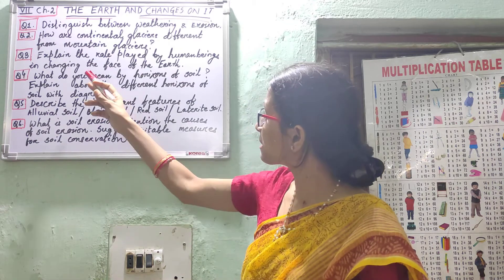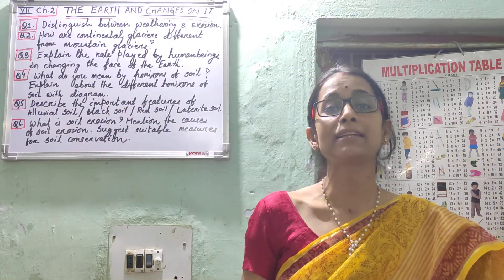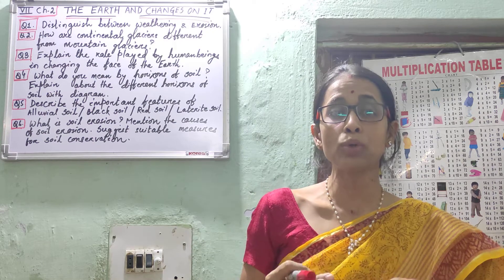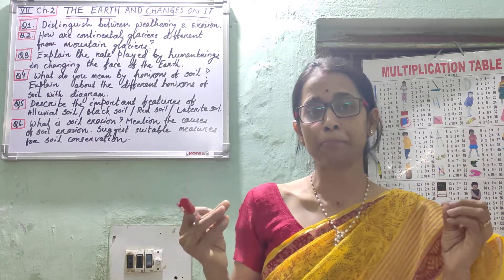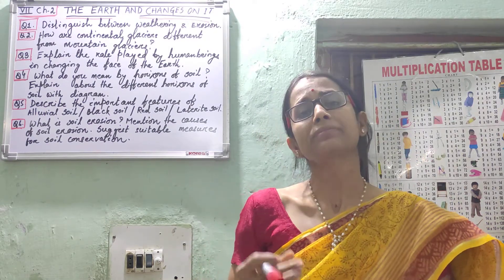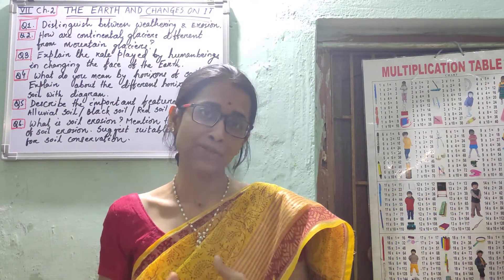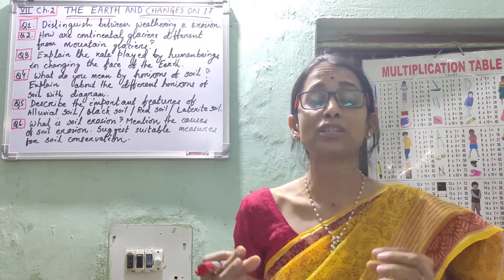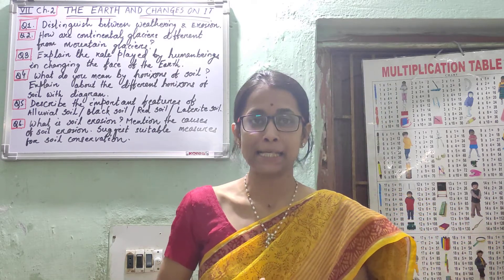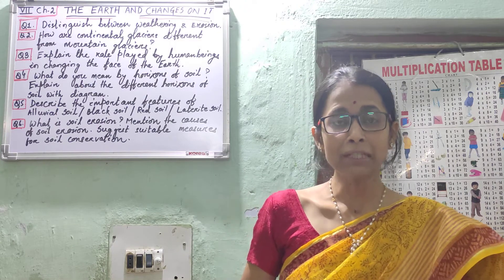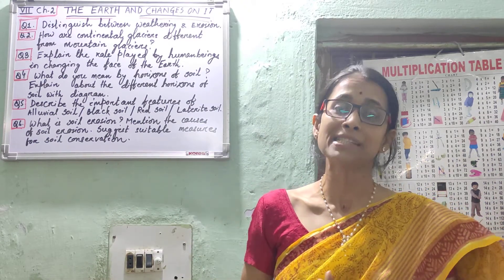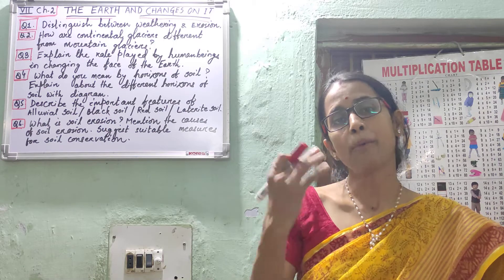The next question: explain the role played by human beings in changing the face of the earth. This is a paragraph-based question given in the book. Human beings play a crucial role in changing the face of the earth due to the overgrowing population and industrialization that has disturbed the natural environment. Wrong human activities like deforestation, changes in land use pattern, and overgrazing by animals are other reasons changing the face of the earth.